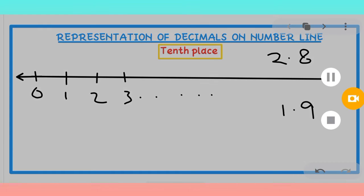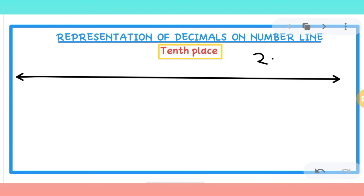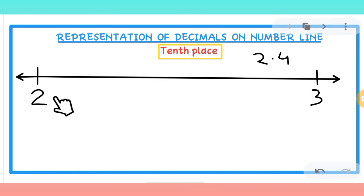Now if we have to represent 2.4, we know this decimal number will come between 2 and 3. So on the number line we draw the segment between 2 and 3. In between any two numbers, the number of divisions is always 10 — whether it is between 2 and 3, or 4 and 5, or 100 and 101. So first we divide this segment into 10 parts: 1, 2, 3, 4, 5, 6, 7, 8, 9.